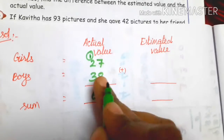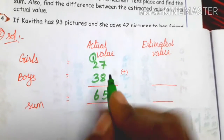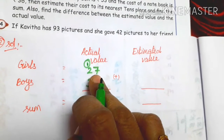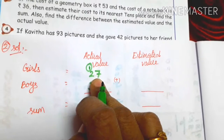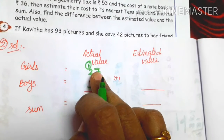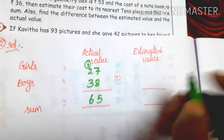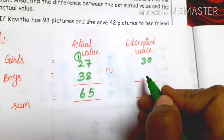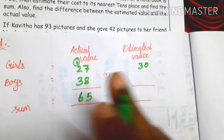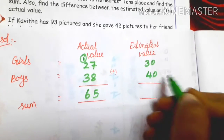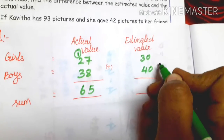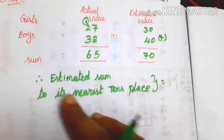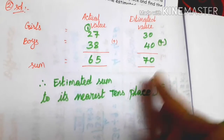Next, find the estimated value. We are going to estimate to the nearest 10th place. For 27, the 10s place digit is 2, and 7 is greater than 5, so 27 rounds to 30. For 38, since 8 is greater than 5, 38 rounds to 40. Now add: 3 plus 4 is 7, so the estimated sum to the nearest 10th place is 70.